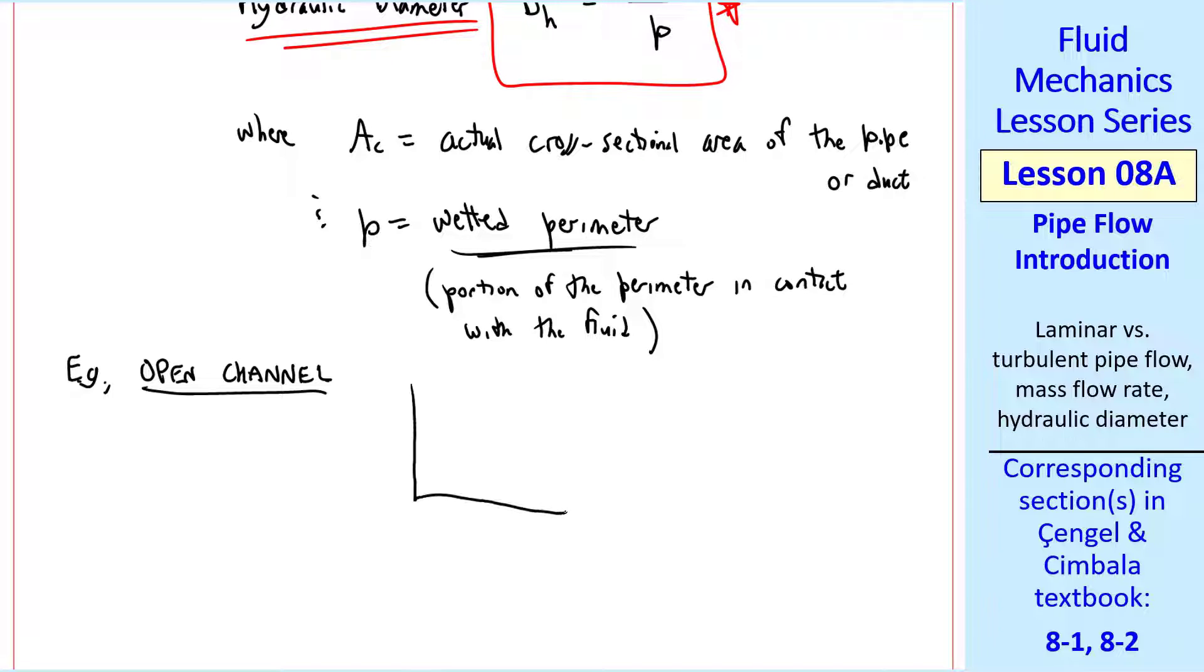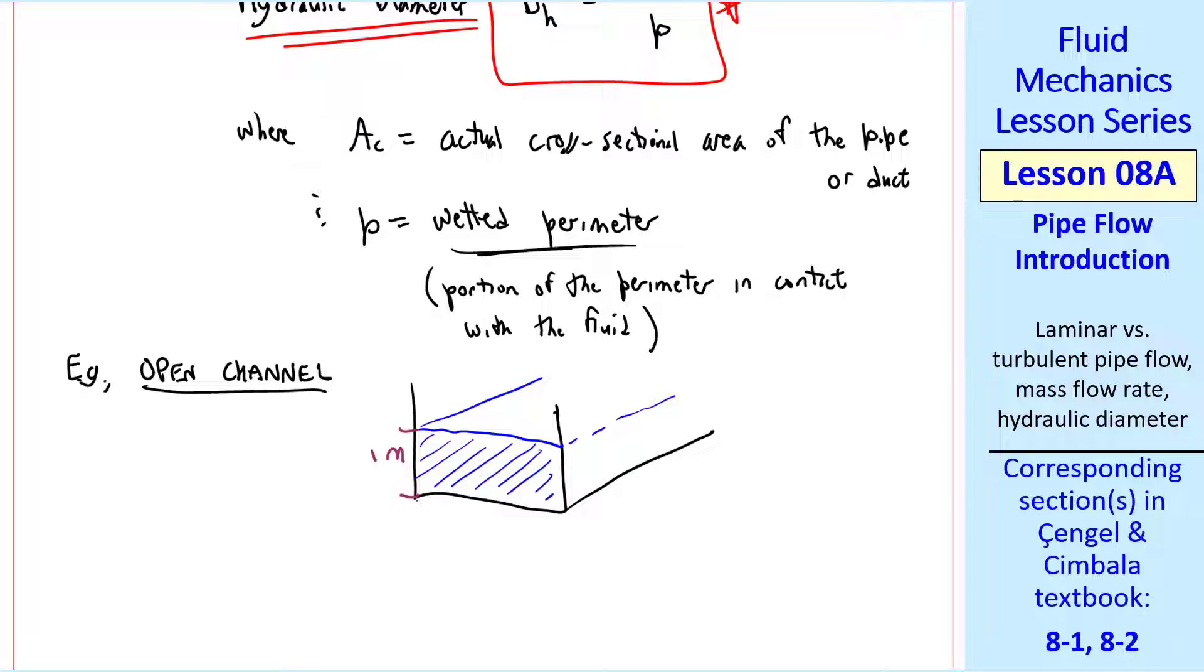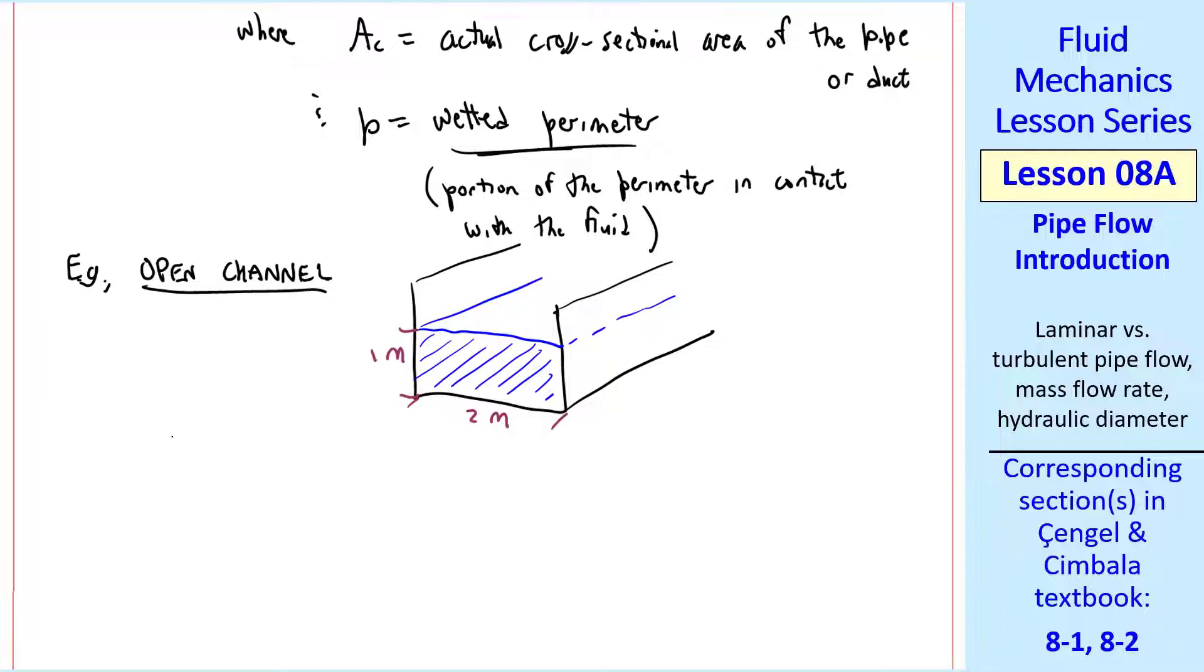Let's take, for example, an open channel where water or some other liquid fills up only a portion of the channel. Suppose this height is 1 meter and its width is 2 meters. You don't count this portion of the inside of this channel because it's not exposed or wetted by the liquid.